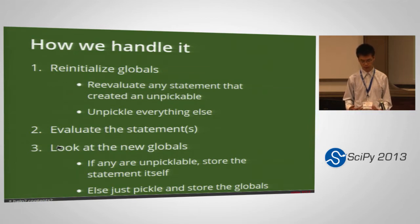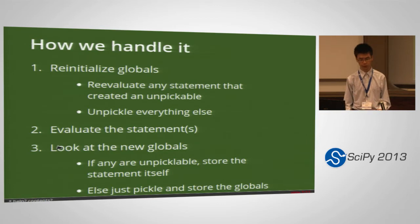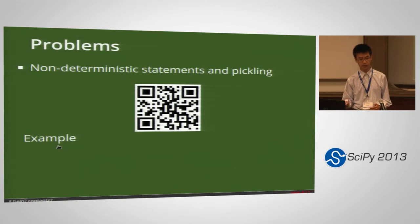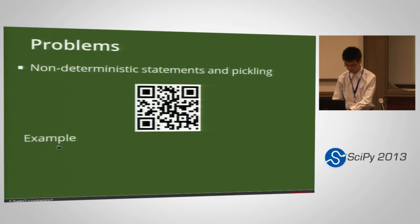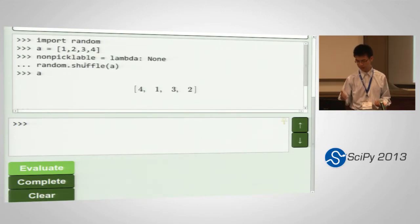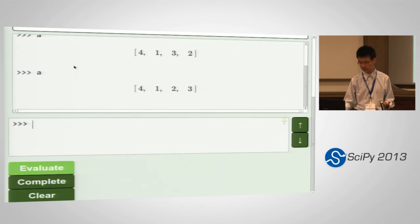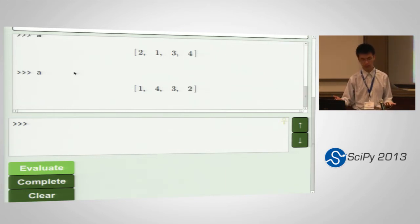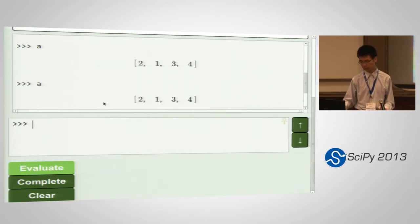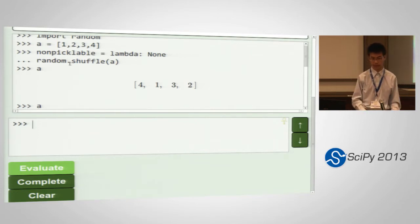It works reasonably quickly. The execution time limit is 60 seconds, so for most queries it shouldn't be a problem. However, this does present some problems when you have a non-deterministic statement — for example, if you import the random module, create a list, define something that isn't picklable, and then shuffle the list in the same statement, every time you try to reference that list you get a different result because it's reevaluating that statement each time. Right now we don't have a good workaround, although we're discussing some alternatives.